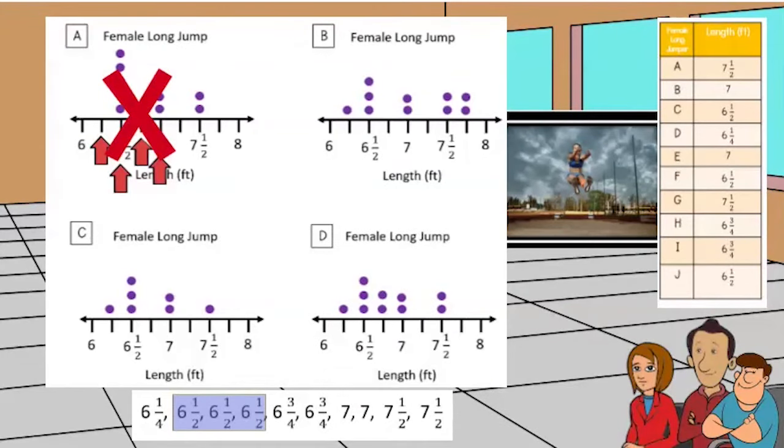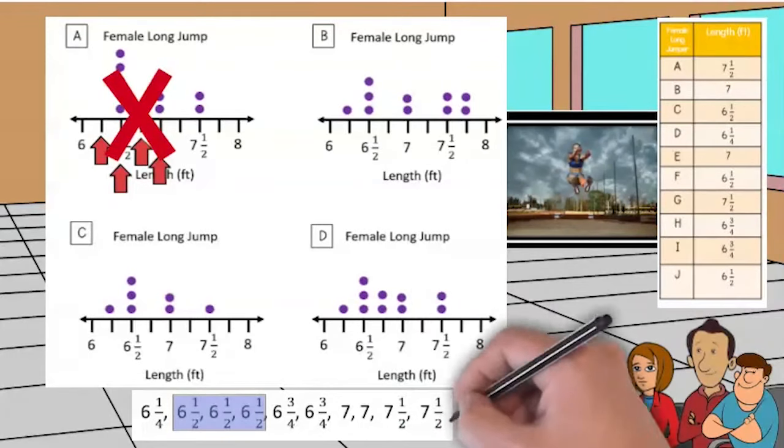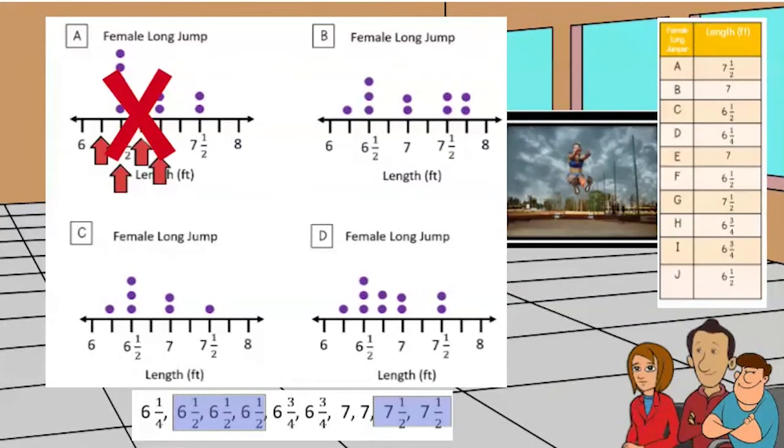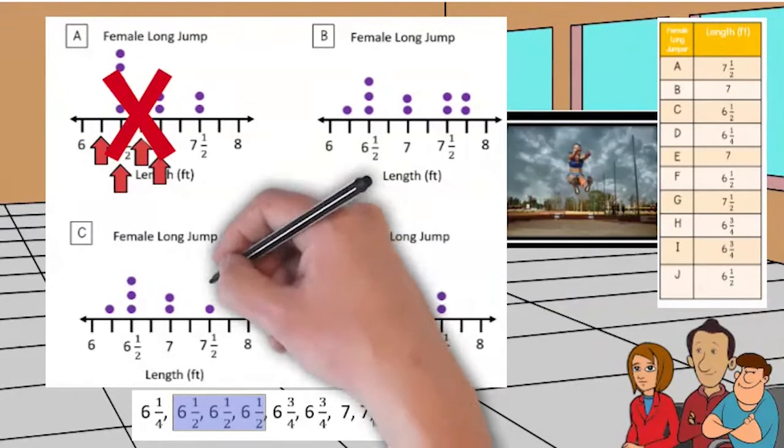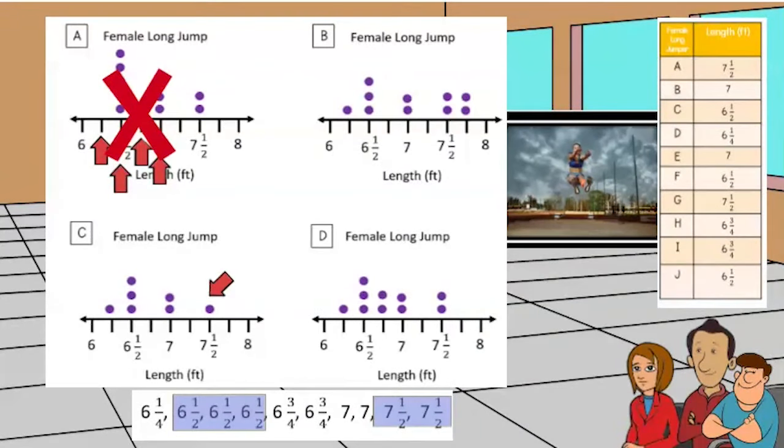That's right. There are also two seven and a halves recorded in the chart. Do any of the graphs left represent seven and a half wrong? Yes, look at graph C, there is only one data point represented.